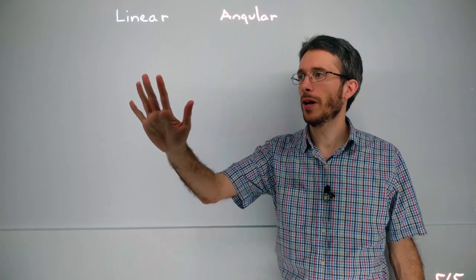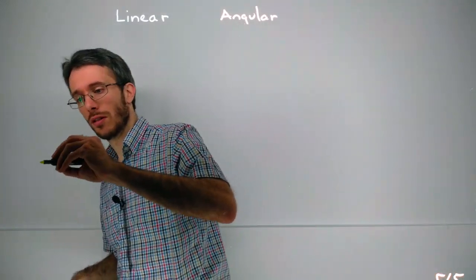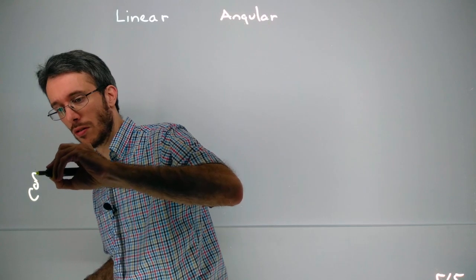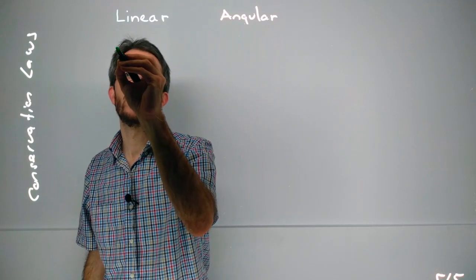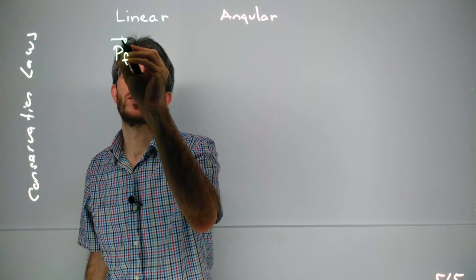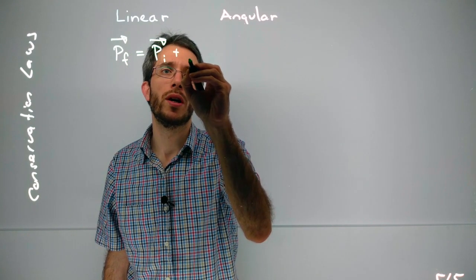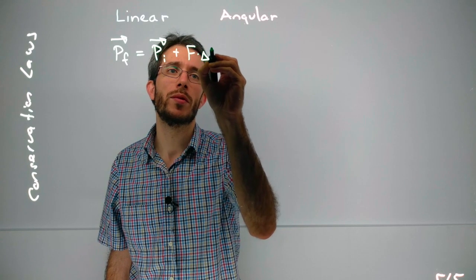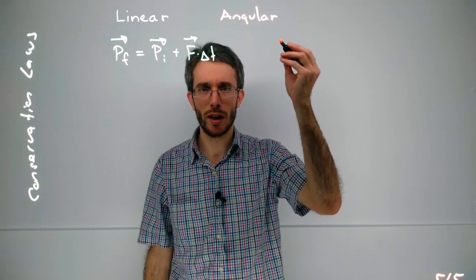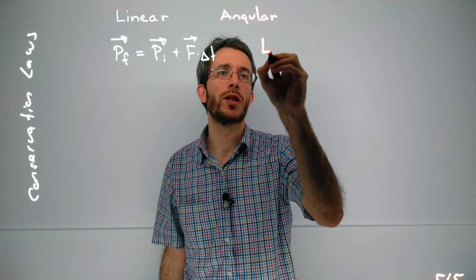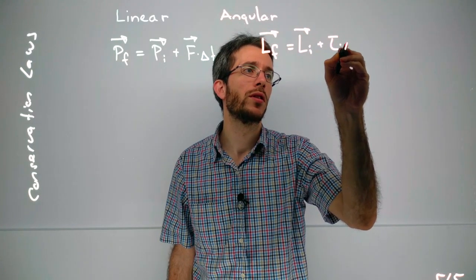Now, on our fifth page, out of the five pages of the summary, we're going to be looking at conservation laws. First, we had a vector law, which was that the final momentum is equal to the initial momentum plus the change, and the change is by force times time. The angular equivalent to that one is conservation of angular momentum. So, L final is L initial plus torque times time.